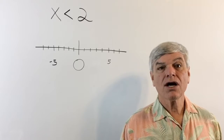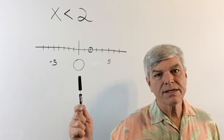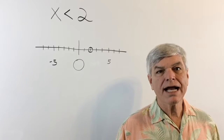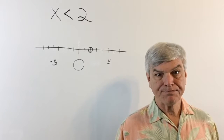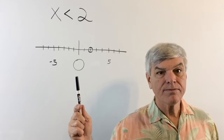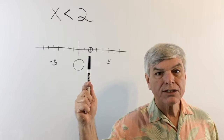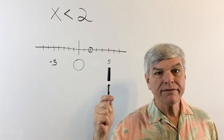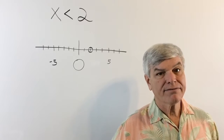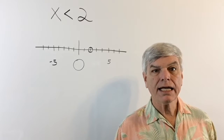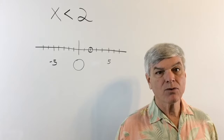We are going to start at 2. In the middle of our graph is 0. This is a line graph — not an xy coordinate system, just a line graph. The center is 0, and as we go out in a positive direction you can see 1, 2, 3, 4, 5. I've marked 5 and negative 5. If we go out in the other direction, we are going in a negative direction.